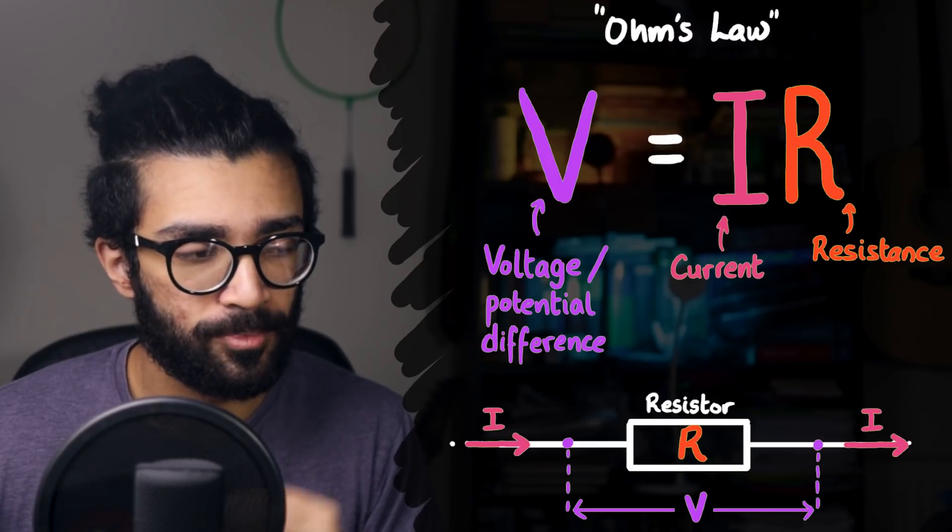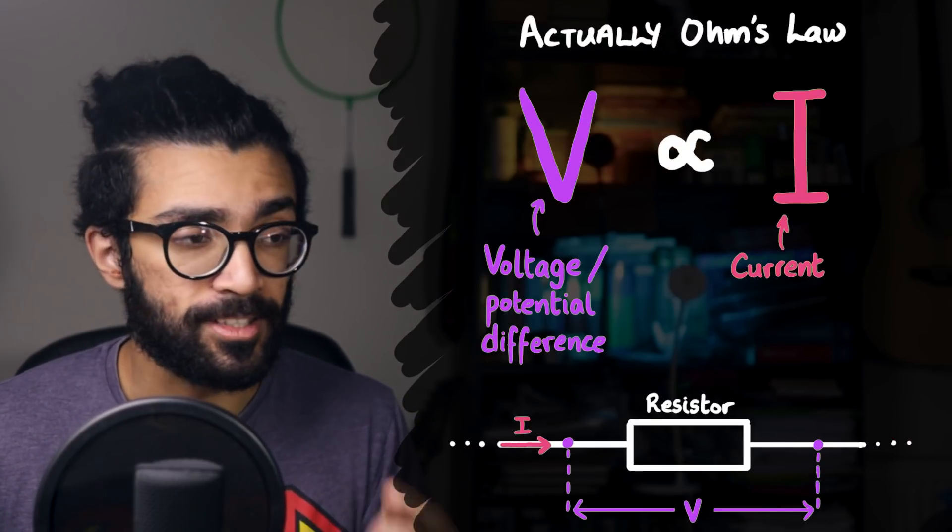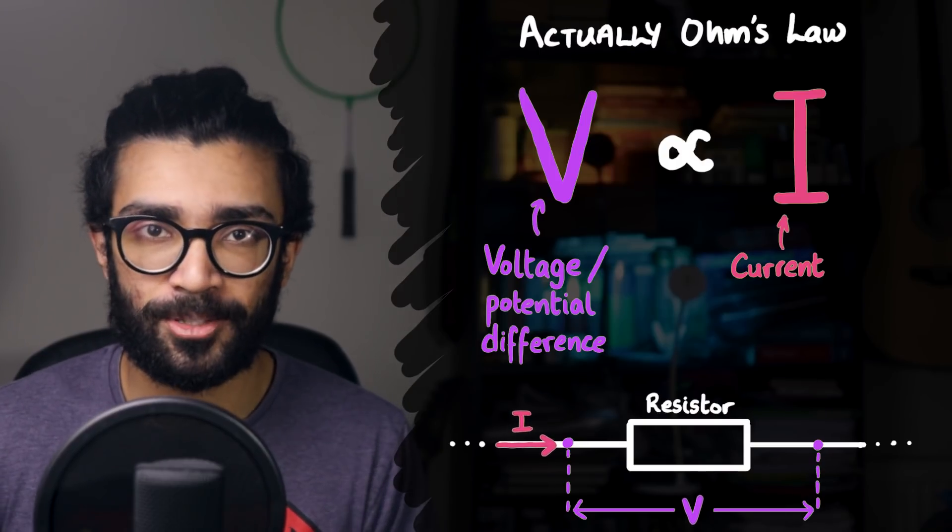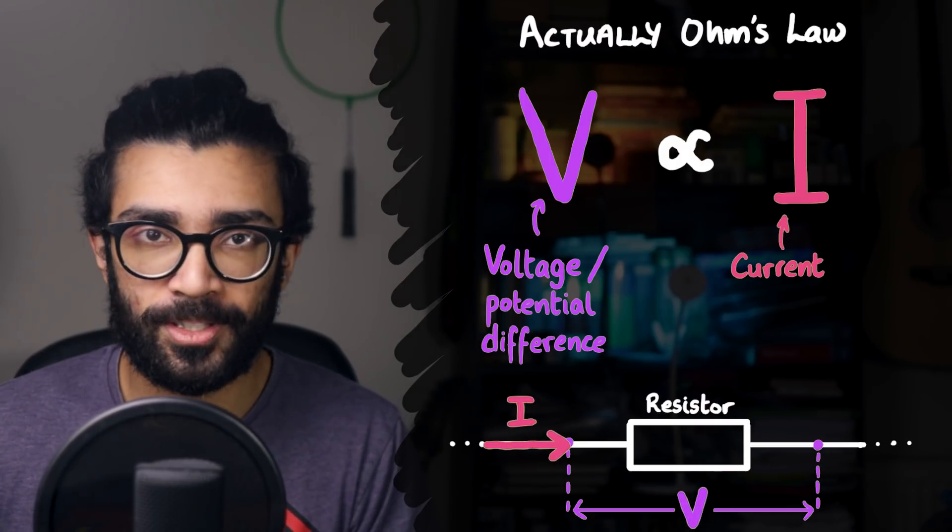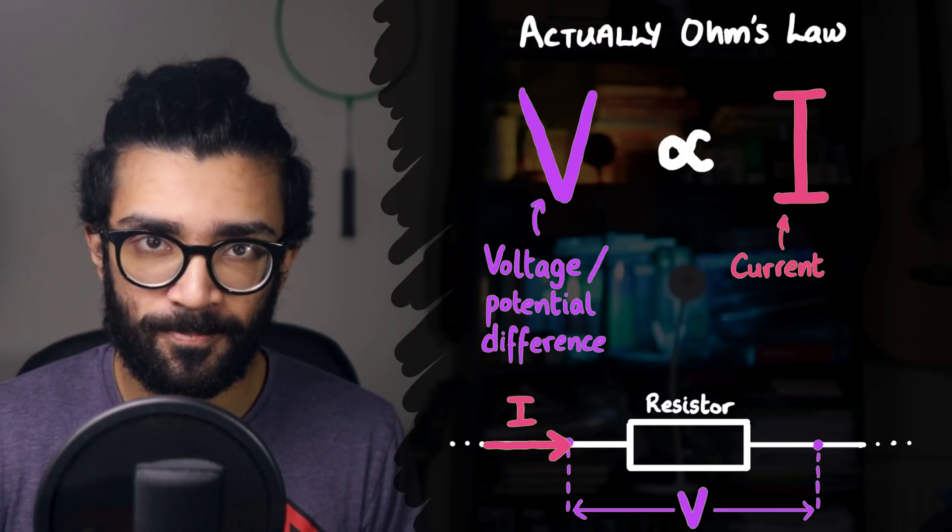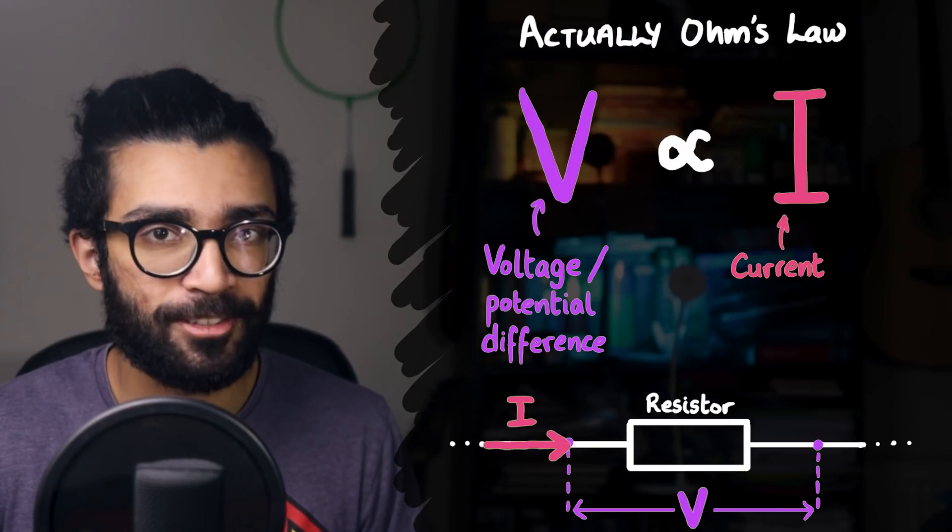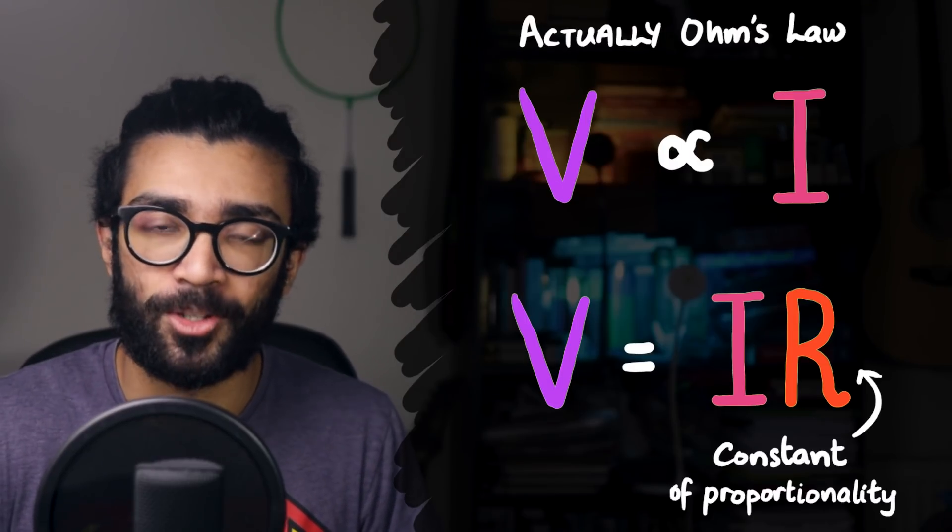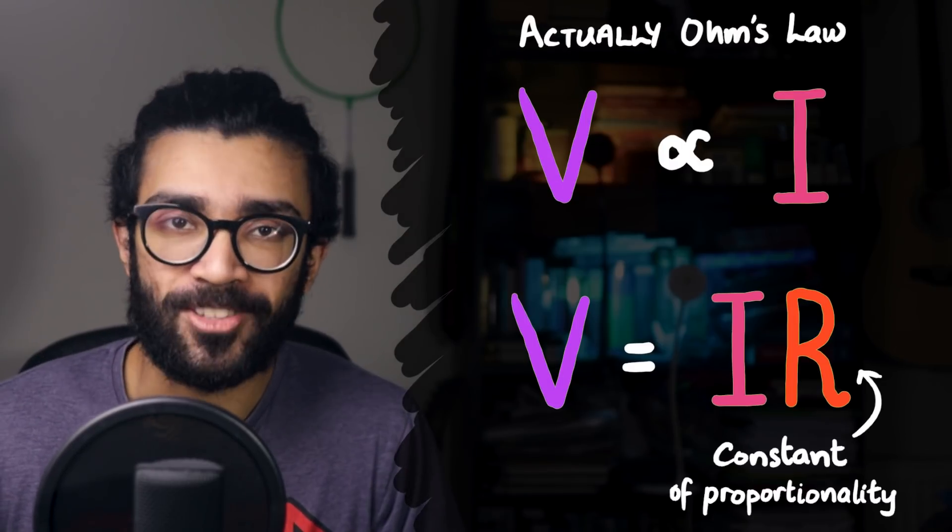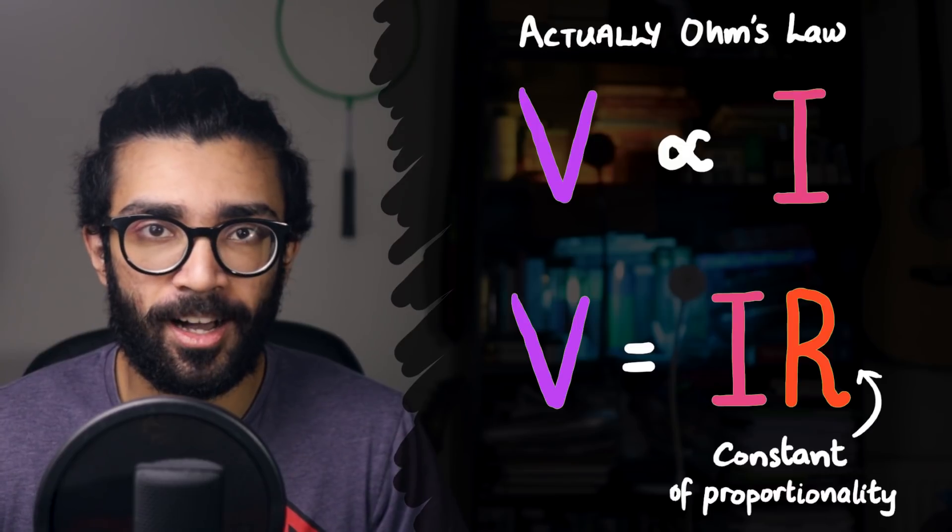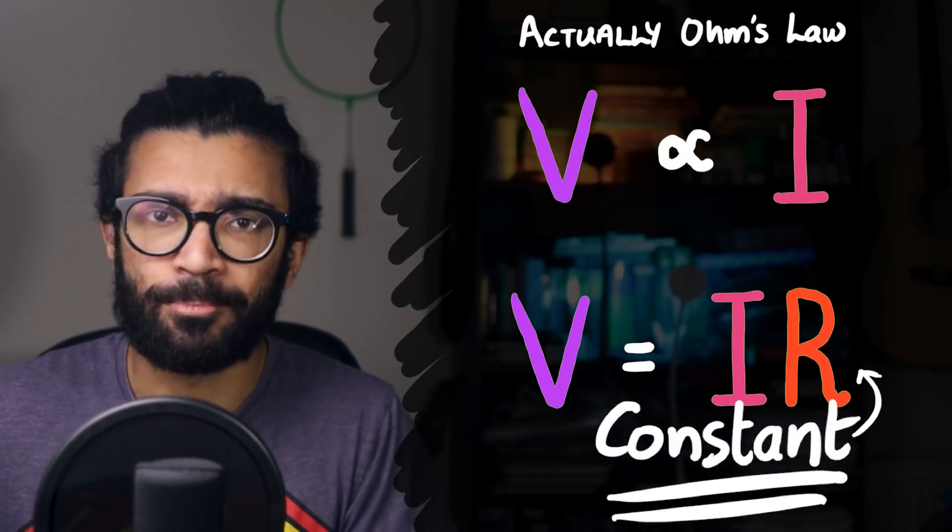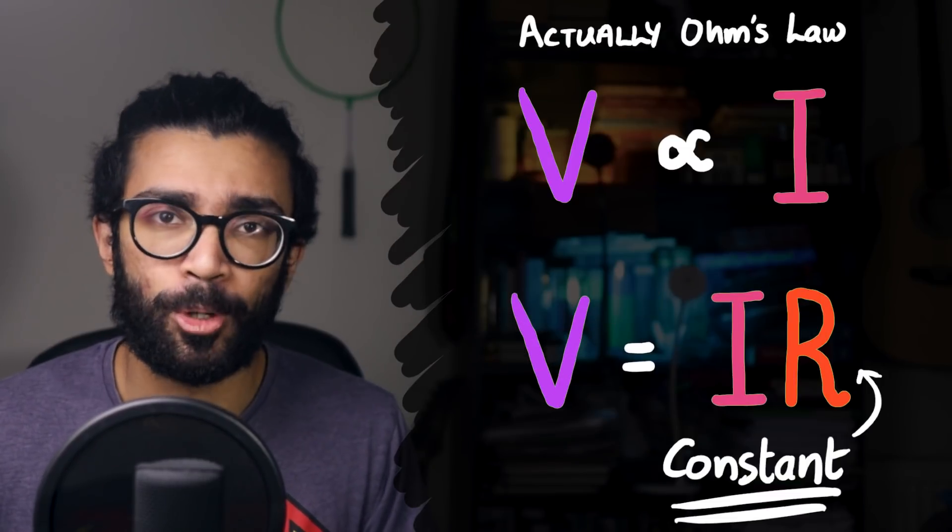that Ohm's law actually states that the potential difference V is directly proportional to the current I. In other words, the larger the potential difference across a circuit component, the larger the current through it. When we turn this proportionality relation into an equation, we define the resistance as being the constant of proportionality. And hence, our equation reads V equals IR. But the thing that we often forget is that in this equation, R must be constant in order for this to obey Ohm's law.